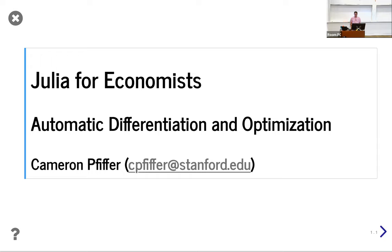Today we're basically going to be doing the third of five in a series about doing Julia for economics. I'm going to be talking about automatic differentiation, which is how you get derivatives very easily, and how you do optimization with nonlinear objective functions, integer programming, and some other stuff like that. This should be useful for basically everyone who does any kind of optimization or automatic differentiation. You can just drop in and out as you need.